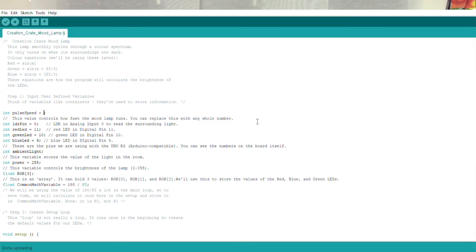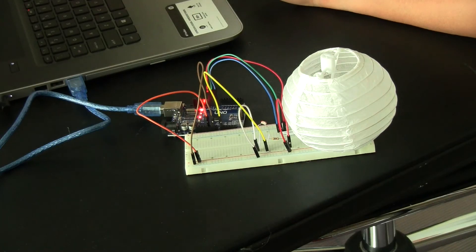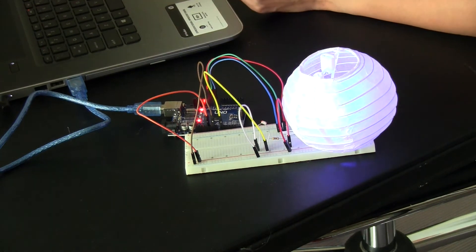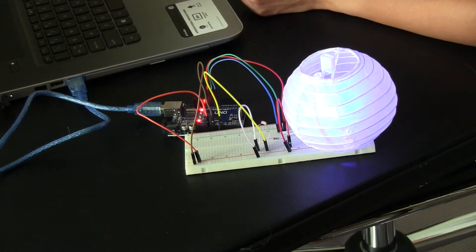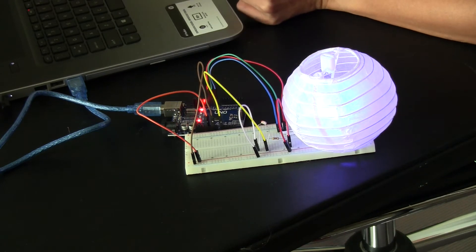This value controls how fast the mood lamp runs. You can replace this with any whole number. It's five now. I'm going to change it to ten and then I'm going to verify and then upload and see what that brings. And then here it lights up again. Now it'll go through all of the changes faster now, or maybe even slower.